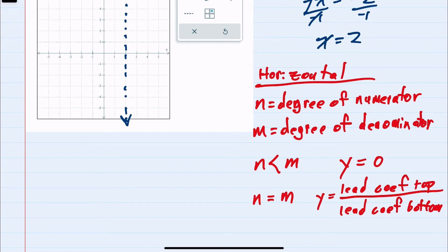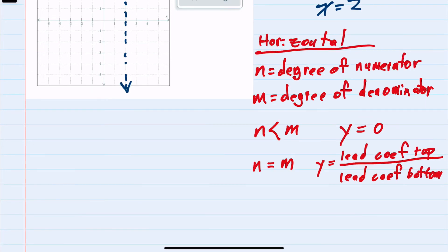And then the last possibility is that the degree of the numerator is larger than the degree of the denominator. And in this case, there is no horizontal asymptote.